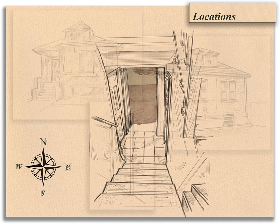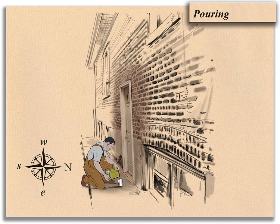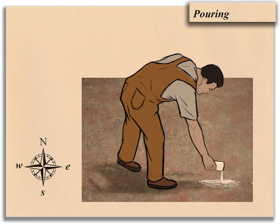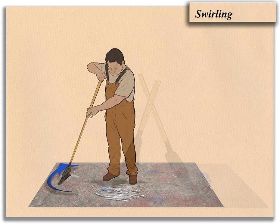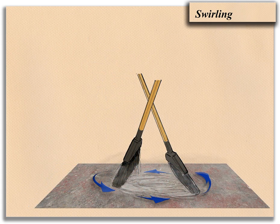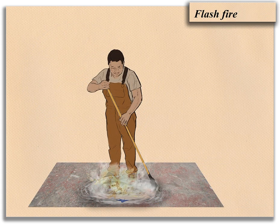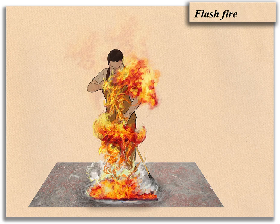What we have right here is a product liability case, and what we were asked to illustrate was that the vapors from the product could be ignited by static electricity. Swirling the broom causes static electricity, which ignited the vapors and caused injury to the worker.